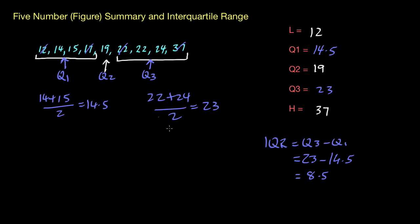The last thing to look at is the range itself, which is different to the interquartile range. The range is the spread of the entire data set — you take the highest value and subtract the lowest. So 37 take away 12 gives us 25.